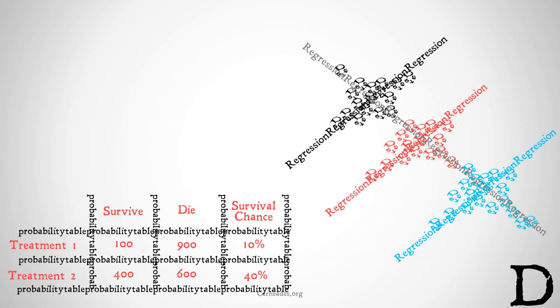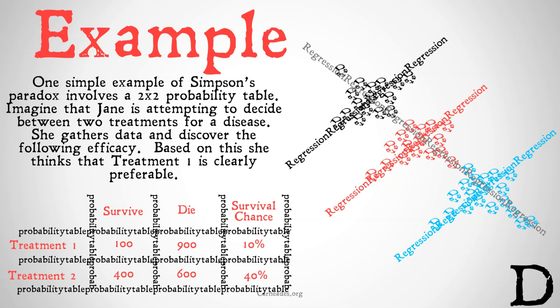One example of Simpson's Paradox that's pretty basic involves a 2x2 probability table. Imagine that Jane is attempting to decide between two treatments for a disease that she has. She gathers data and discovers the following efficacy: a survival chance of 10% for treatment 1 and a survival chance of 40% for treatment 2. Based on this, she thinks that treatment 2 is clearly preferable. She draws one conclusion.